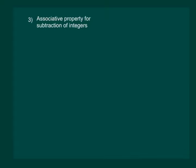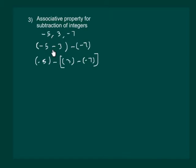Let us now check for the associative property for subtraction of integers. Say we have minus 5, 3, and minus 7. Let us group them as minus 5 minus 3, minus of minus 7. Notice that this time we are checking the property for subtraction, so we are using minus sign while grouping.